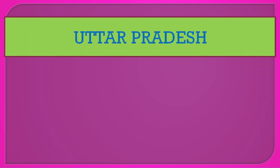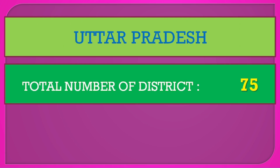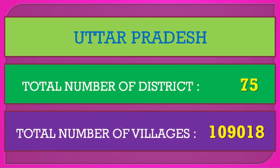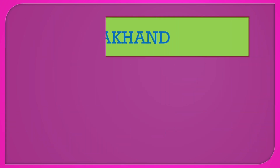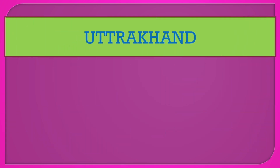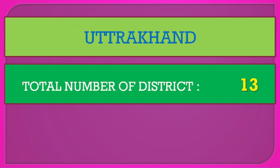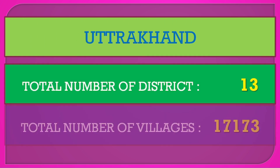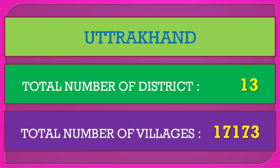Uttar Pradesh: total number of districts 75, total number of villages 1,09,018. Uttarakhand: total number of districts 13, total number of villages 17,173.